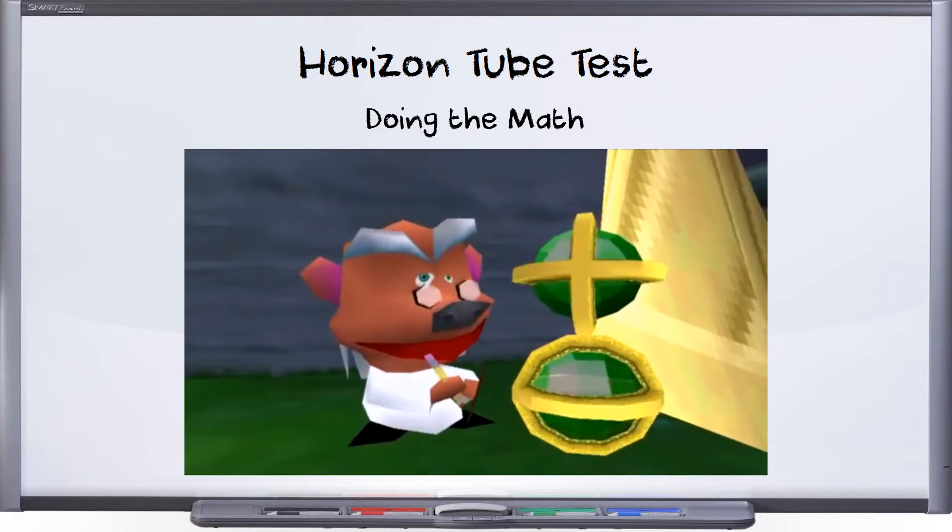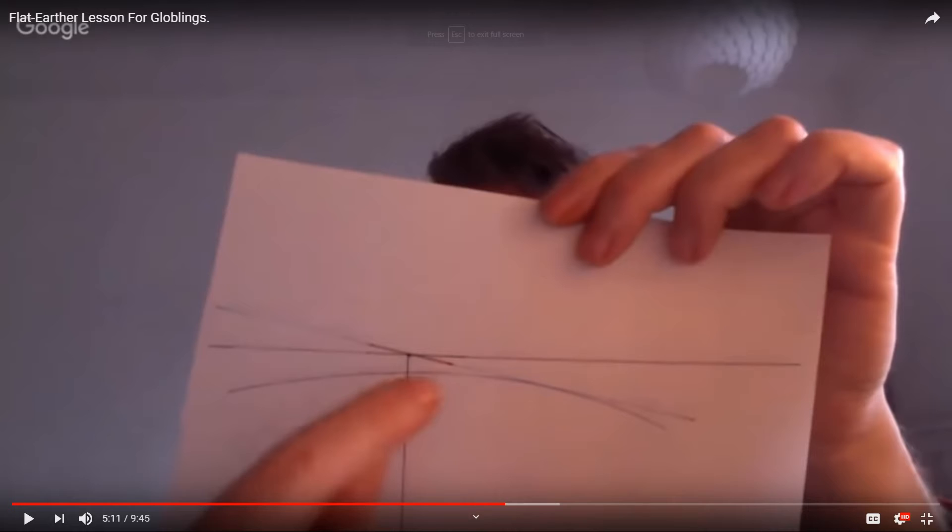We're going to check out the Horizon Tube Test. This is a test being suggested by Antonio Subratz, who's a Flat Earth YouTuber. He suggests we just take some sort of tube here and we mount it such that it is aimed at the horizon. And he suggests that if one end is aimed at the horizon of a sphere, then the other end will be aimed up at the sky.